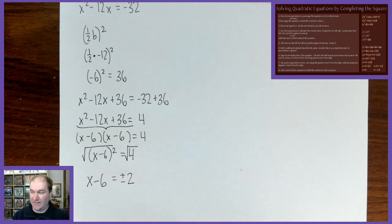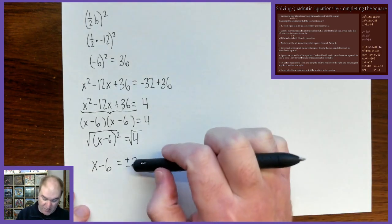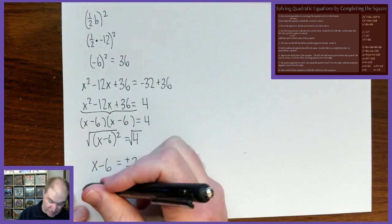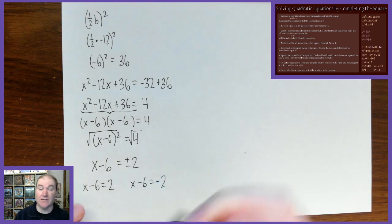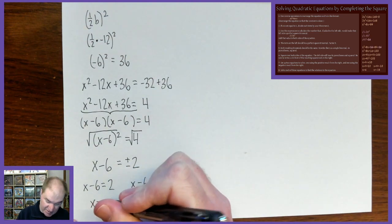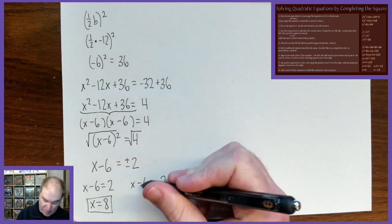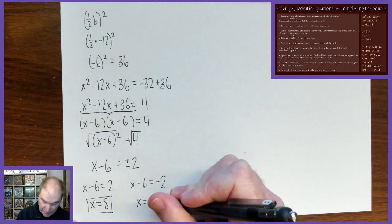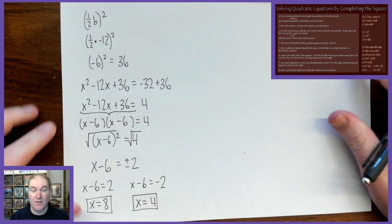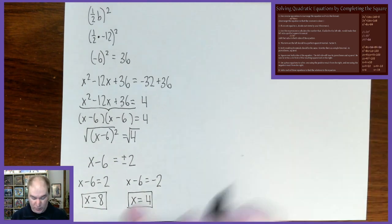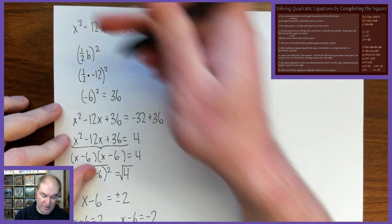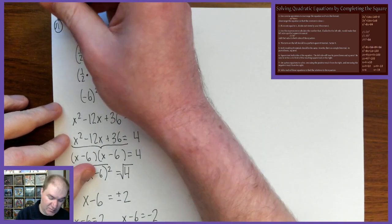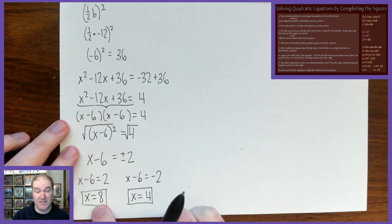Finally, we set up two equations to solve because of the plus or minus. Either x minus 6 equals positive 2, which gives x equals 8, or x minus 6 equals negative 2, which gives x equals 4. So the solutions to x squared minus 12x equals negative 32 are x equals 8 and x equals 4.